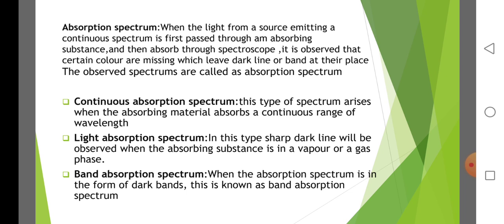Absorption spectrum. When light from a source emitting a continuous spectrum is first passed through an absorbing substance and then through a spectroscope, it is observed that certain colors are missing, leaving dark lines or bands in their place — this is the absorption spectrum. Continuous absorption spectrum arises when the absorbing material absorbs a continuous range of wavelengths. Line absorption spectrum shows sharp dark lines when the absorbing substance is in vapor or gas phase. Band absorption spectrum appears as dark bands.